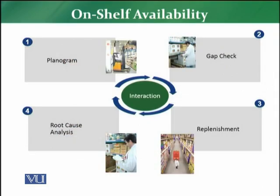There are four main components whose interaction will help in improving on-shelf availability. The first part is planogram, the second part is gap check, the third part is related to replenishment, and the fourth part is related to root cause analysis. We are going to discuss the interaction between all these four attributes which actually help in the on-shelf availability of a particular product.